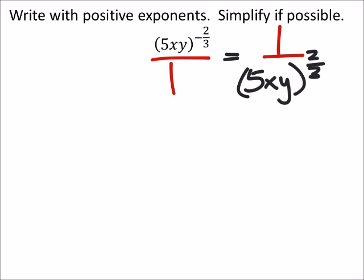5 to the power of 2 thirds is not going to be pretty. So it looks like this is going to be our final answer.